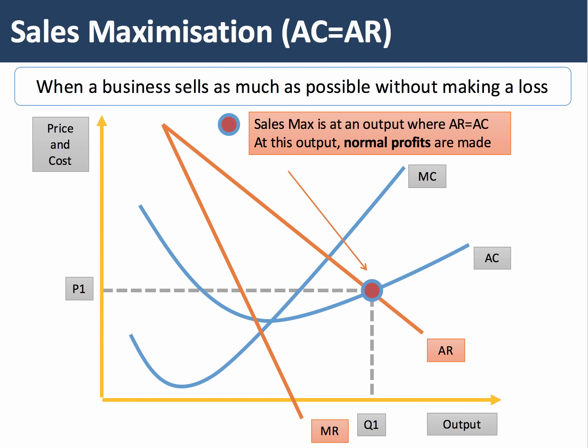A business may target output volume, sales, or market share. One such objective is sales maximization. Sales maximization happens when average cost equals average revenue — price equals average cost. In our diagram, this is output level Q1 at the intersection between average revenue and the average cost curve. At this output level and price P1, normal profits are made because the unit price P1 is the same as the unit cost.